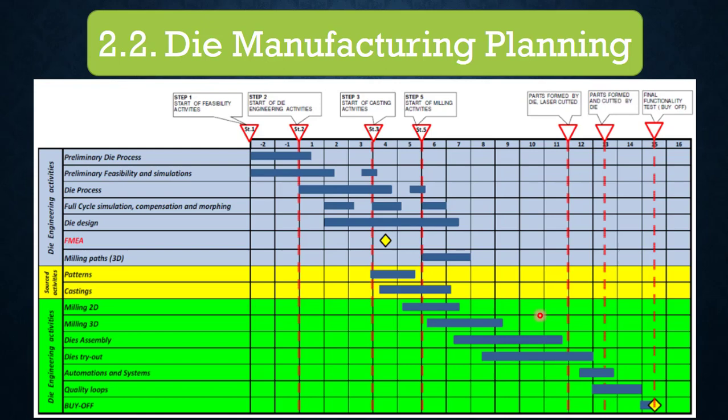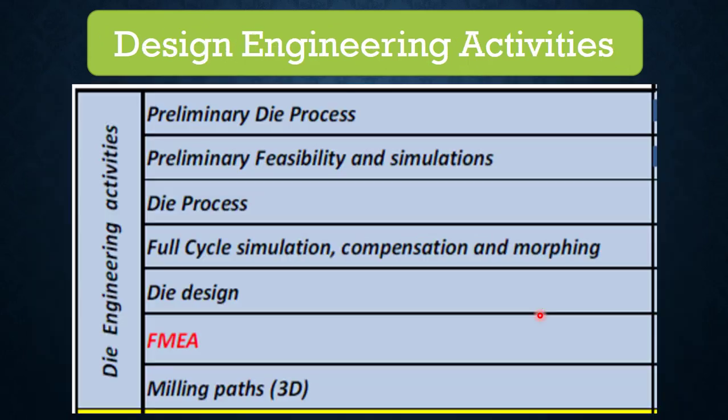Typically, the time ranges from 12 to 14 months for manufacturing larger Class A automotive die sets. However, the entire process can be completed in 6 to 12 months if the dies are small and medium in size, which are Class B and Class C. You can also comment in the comment section about your company's timelines for manufacturing dies.